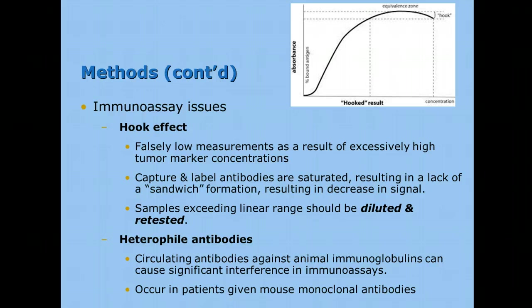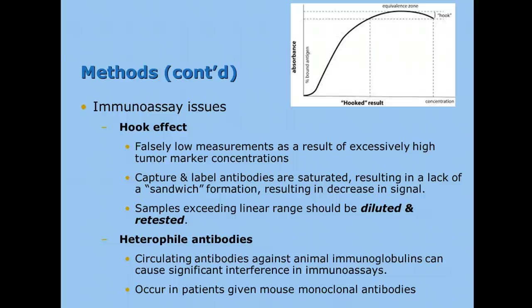We can also have heterophile antibodies — circulating antibodies against immunoglobulins that can cause significant interference in these immunoassays. This can occur in patients given mouse monoclonal antibodies and can affect our laboratory results. For example, we always had the hook effect with progesterones from one physician's patients, so we had to autodilute all of his samples and dilute them times 200 to eliminate any potential hook effect. Modern analyzers are getting sophisticated enough to avoid this interference.